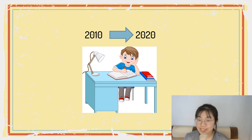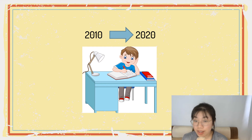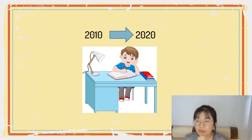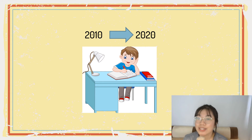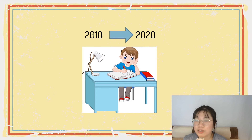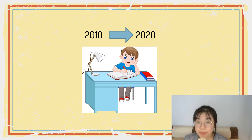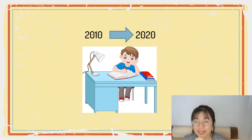Next, what is the boy doing? He is studying English. We can say from the clue that he has been studying English for 10 years, or you can say he has been studying English for a decade. Class, repeat after me: decade.